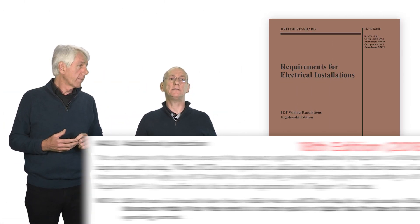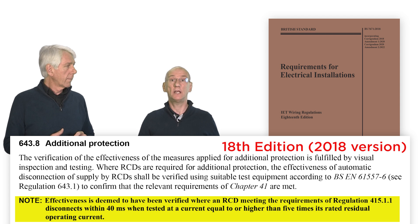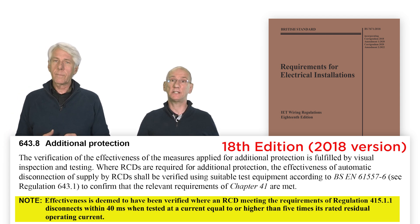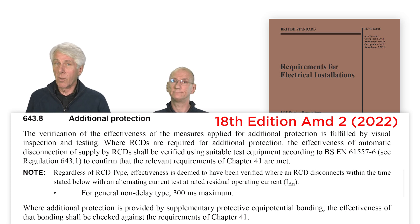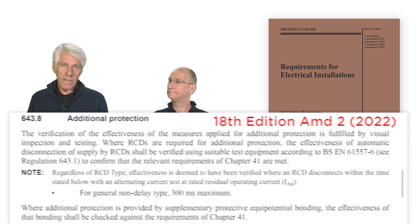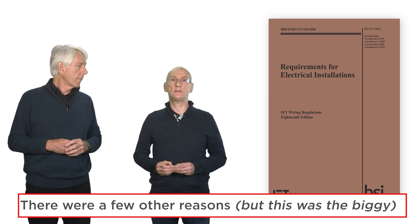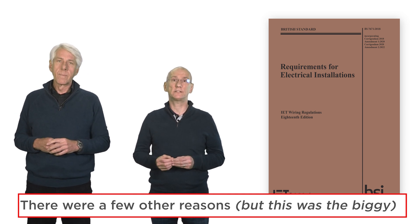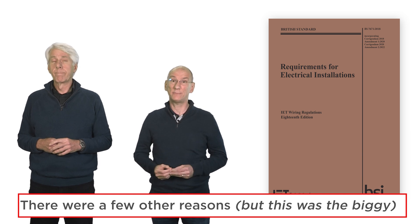When the committee were working on the 18th edition, there was a last-minute desire to keep the reference to the five times test and the 40 milliseconds, so a note was added to Regulation 643.8. But with Amendment 2, this note has gone as well. The reason is that the five times testing requirement isn't always suitable for RCDs. The trigger for the removal of the five times test came from contractors asking for replacement devices that had failed the test but in reality were fine.